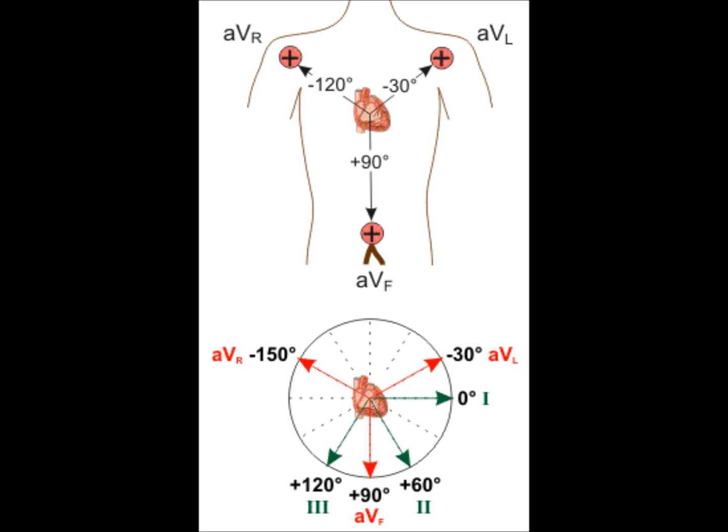Electrical potential produced is very small in the augmented limb leads. As a result, the ECG machine augments the amplitude of the electrical potentials detected at each extremity by about 50%. A stands for augmented. In cases where we have AVR, AVL, AVF, it refers to augmented voltage and then location. AVR is augmented voltage right arm, AVL is augmented voltage left arm, and AVF refers to augmented voltage left foot.